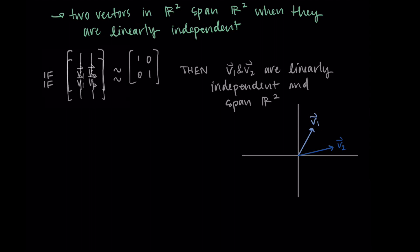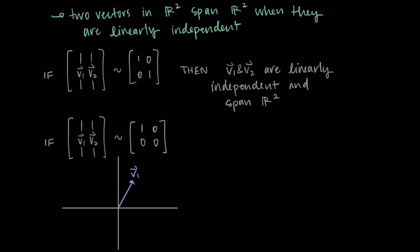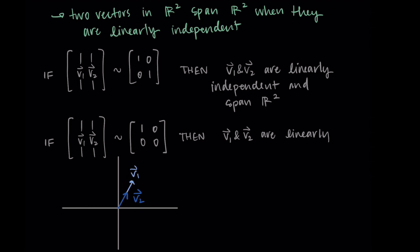However, if we take those same vectors as a matrix and we row reduce and get something like [1, 0; 0, 0], then these two vectors are linearly dependent since that second column has a free variable, and these do not span R2. In this case, one of the vectors is a linear combination of the other, and so these two vectors don't span R2.